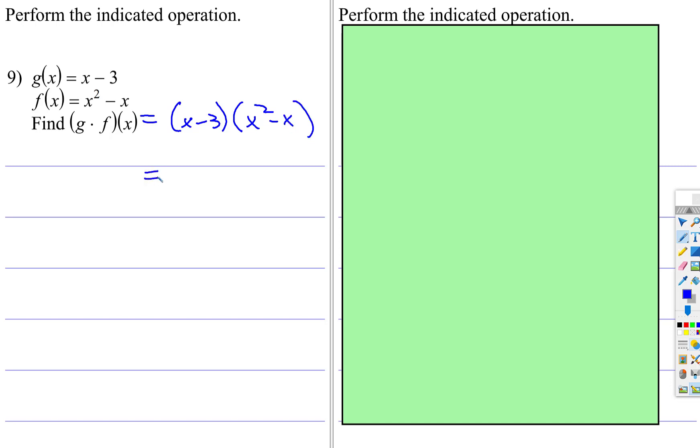And then just perform the multiplication like you normally would, it's a double distributive. x times x squared is x cubed, and there's a subtract sign right there, x times x is x squared. That took care of this part of the distributive. Now you have negative 3 times x squared, which is negative 3x squared, and negative 3 times negative x, which is positive 3x.